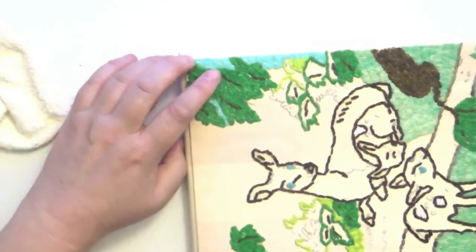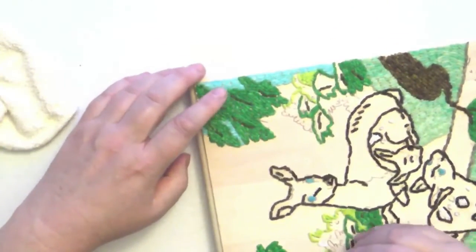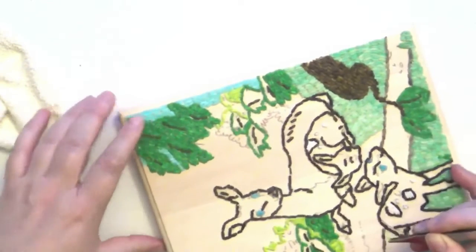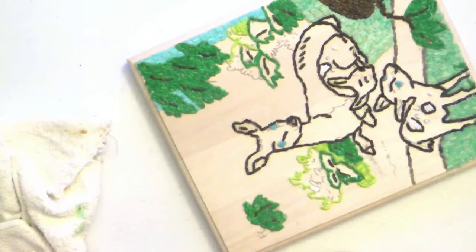I'm just switching around what color I'm working on. So you can tell the difference between the bushes, the grass, and the dark leaves from the trees.